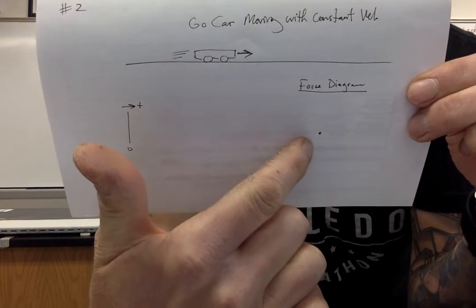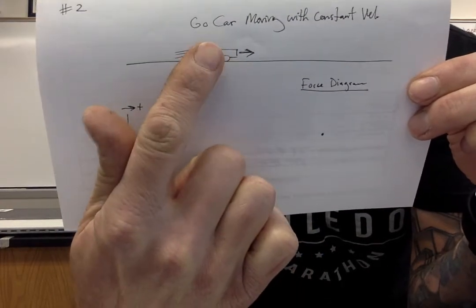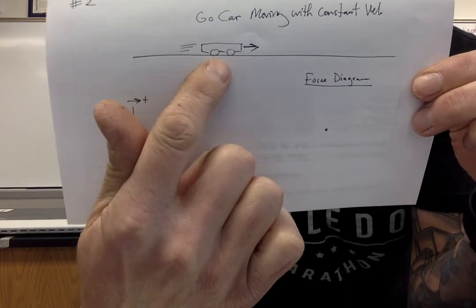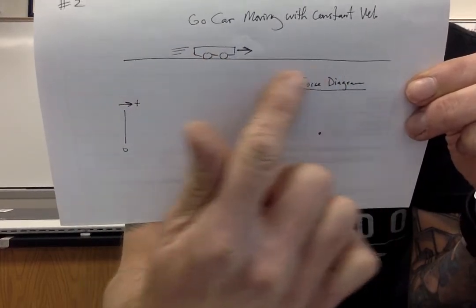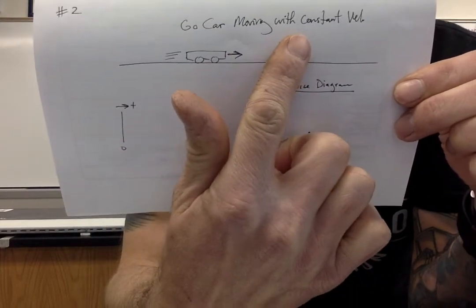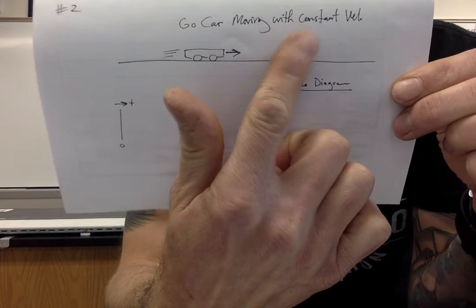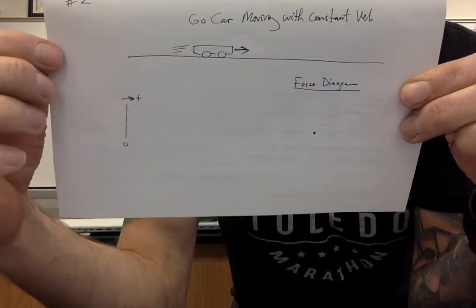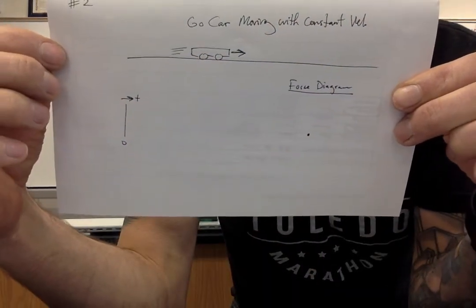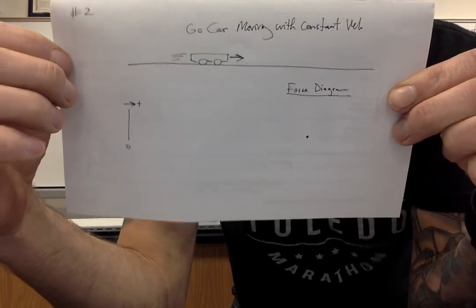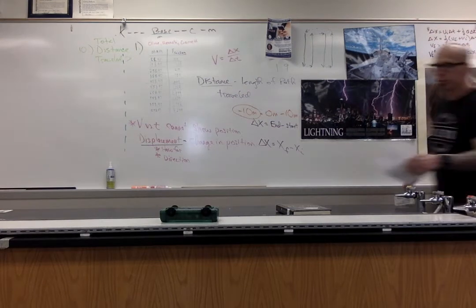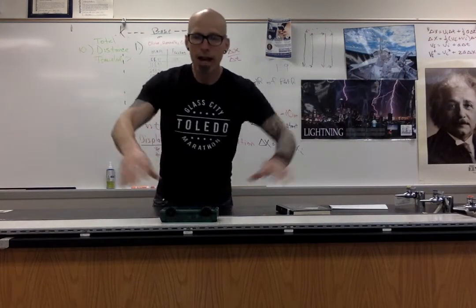For your description on that one, you might say 'go-kart moving with constant velocity,' and again, a motion map that shows that, and a force diagram that shows the go-kart is moving with a constant velocity. Notice there's nothing else in the picture with the go-kart, because it was just the go-kart on the track. Did something happen off-camera? Of course, but that's not the scenario. The scenario only starts when you see the car, so you can only talk about the things you see during the scenario. Pause and sketch all that out.